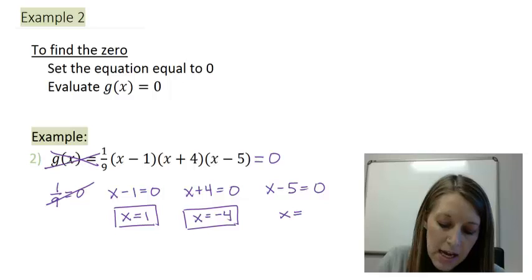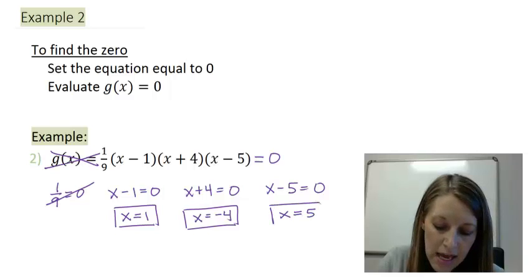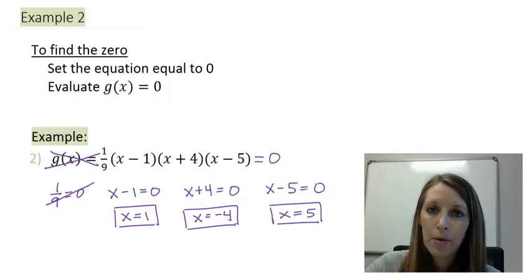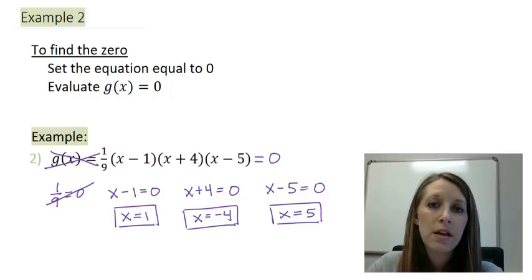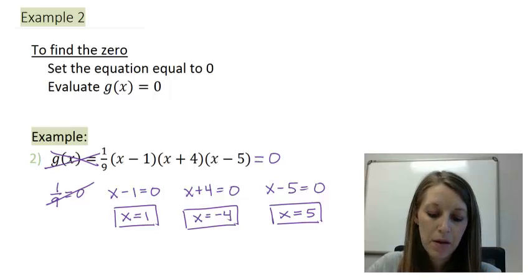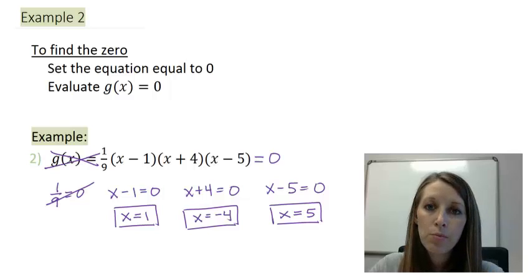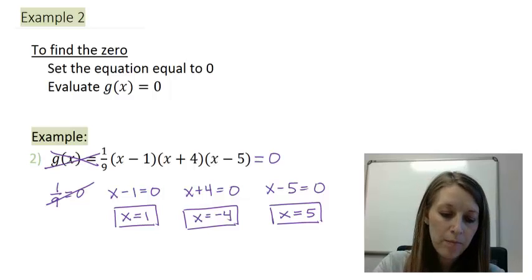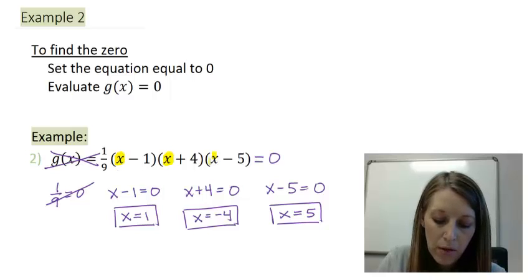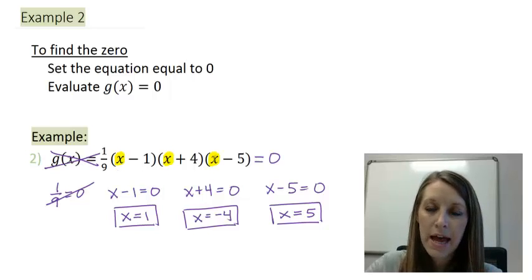I've skipped showing isolating x step-by-step by doing opposite operations, but we've seen enough examples that you can follow along. So I have three solutions. And if I were to multiply out this problem, I would have a degree-3 polynomial — x times x times x gives me x³ — so that confirms I should have three solutions.